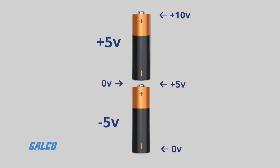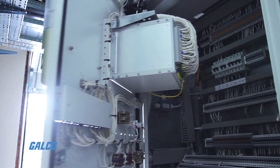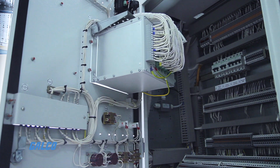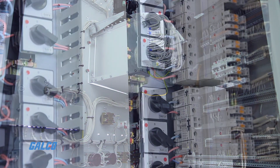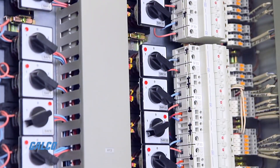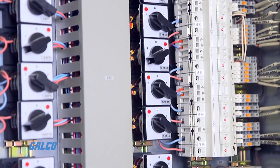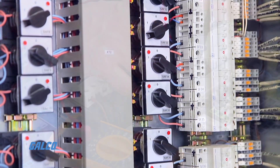The potential difference of the circuit is still 10 volts, but our reference point creates both a positive and negative voltage value. You'll commonly find this concept at work in op-amp circuits with bipolar power supplies that can both source or provide and sink or absorb power.